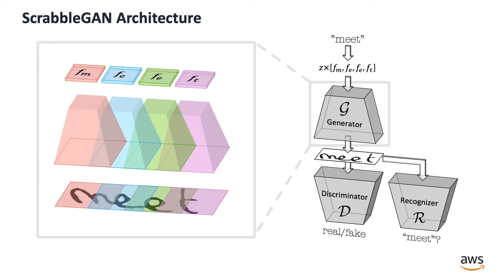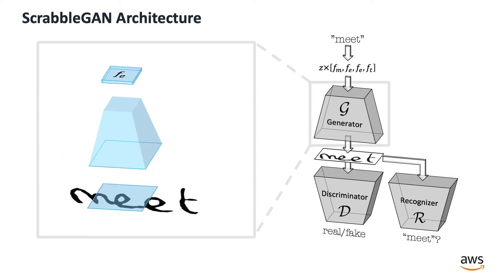The generator architecture produces a receptive field for each input character with overlaps between them which enable the generation of cursive text.